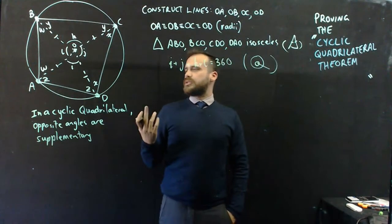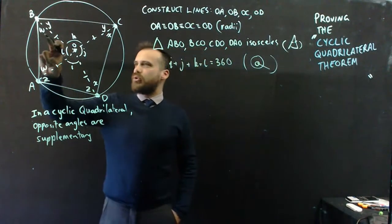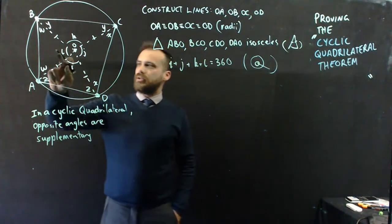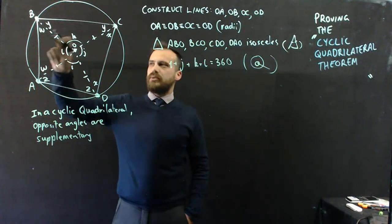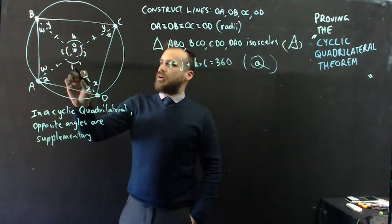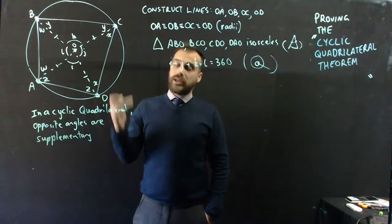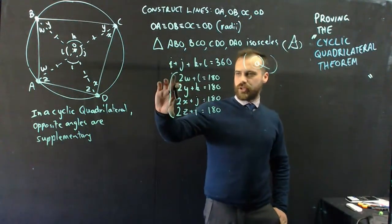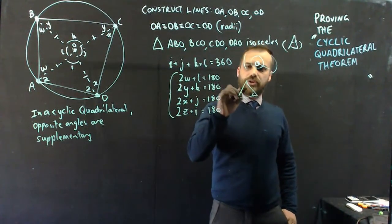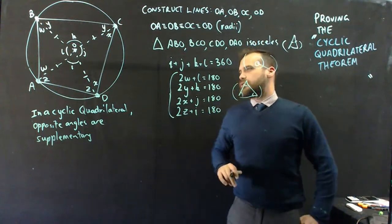Now, what else can we say here? Well, we've got four relationships that are all identical. So we can say L plus 2W equals 180. We can say K plus 2Y, J plus 2X, and I plus 2Z all equal 180 degrees. And we have these four equations here that are all true because of the internal angles of a triangle.